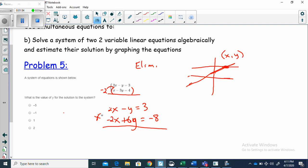Now, I'm adding 2X plus negative 2X is 0. The X is gone. Negative Y plus negative 1Y plus positive 6Y would give me 5Y is equal to 3 plus negative 8 gives me negative 5.